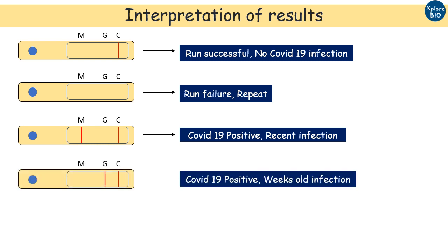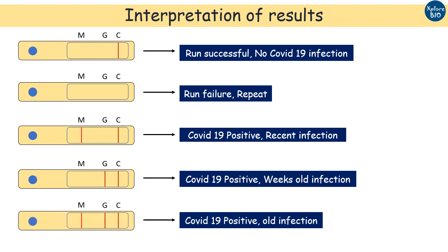If G line appears, it means IgG antibodies are present suggesting that the infection of COVID-19 is over a week old, as IgG antibodies are produced as a result of secondary immune response.